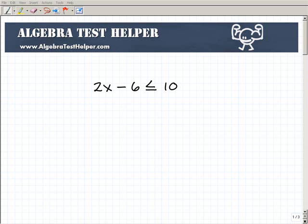Okay, so what do we do here with this problem? 2x minus 6 is less than or equal to 10. Well, what I want you to do is kind of think of this as the problem, say, 2x minus 6 equals 10.